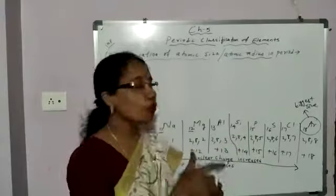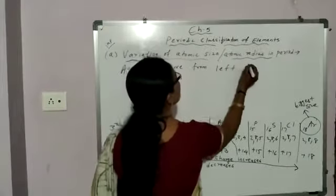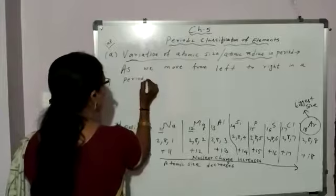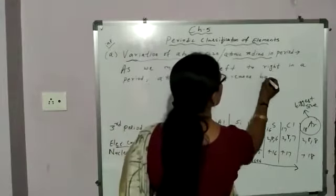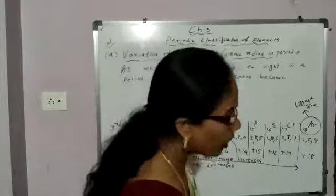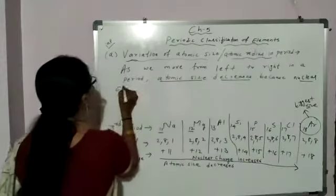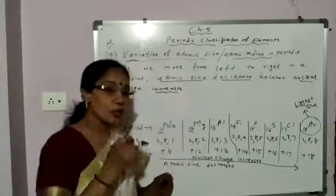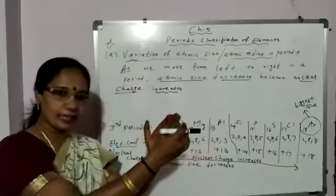As we move from left to right in a period, atomic size or atomic radius decreases. Because what is the reason you will give? Because nuclear charge increases. And what happens when nuclear charge increases? Force of attraction between nucleus and electron in the outer most shell increases. So size decreases.